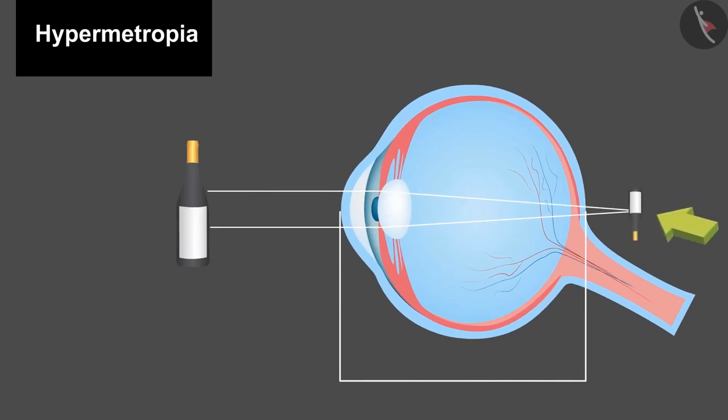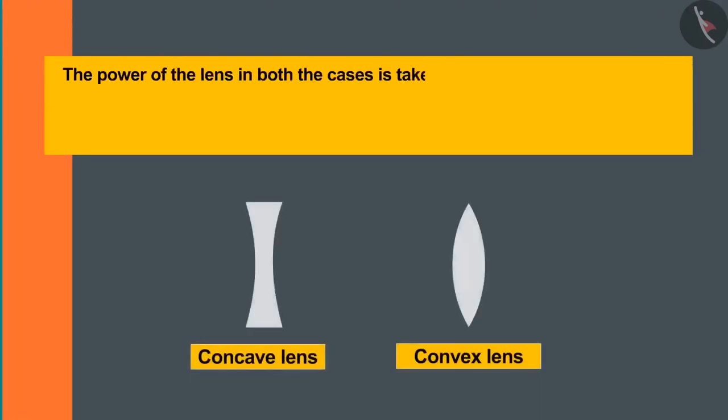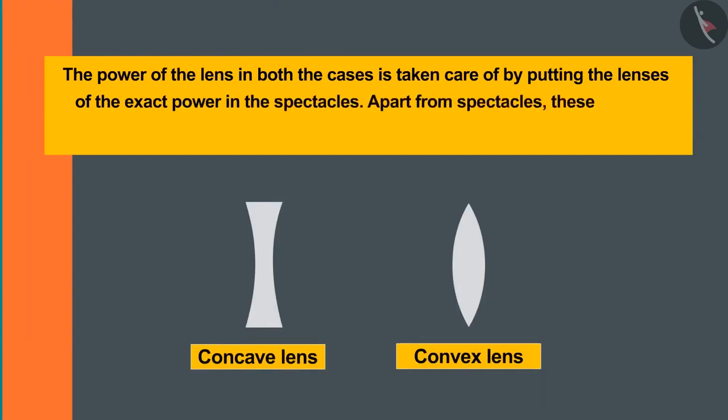So a converging or a convex lens is taken to converge it to the exact point, making the image on the retina. The power of the lens in both the cases is taken care by putting the lenses of the exact power in the spectacles. Apart from spectacles, these defects can also be overcome through various types of surgery.